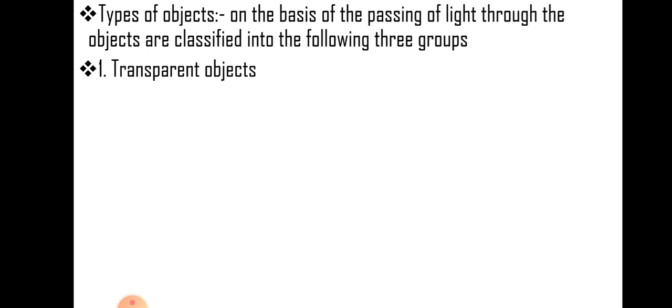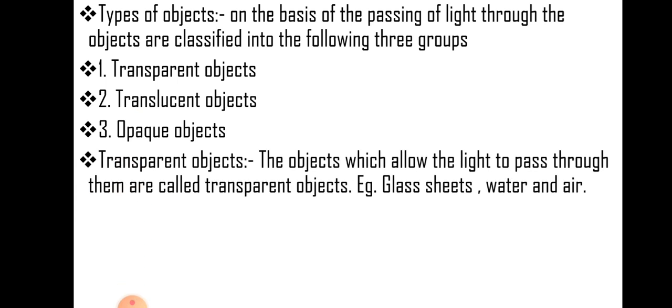They are transparent object, translucent object and opaque object. Transparent object means the objects which allow the light to pass through them are called transparent objects. For example, glass sheets, water and air are transparent. We can see through it clearly.